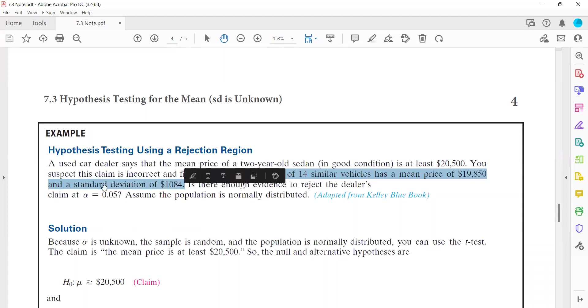As you can see, the standard deviation is for the sample, not for the population. Question says, is there enough evidence to reject the dealer's claim at 5% level of significance?